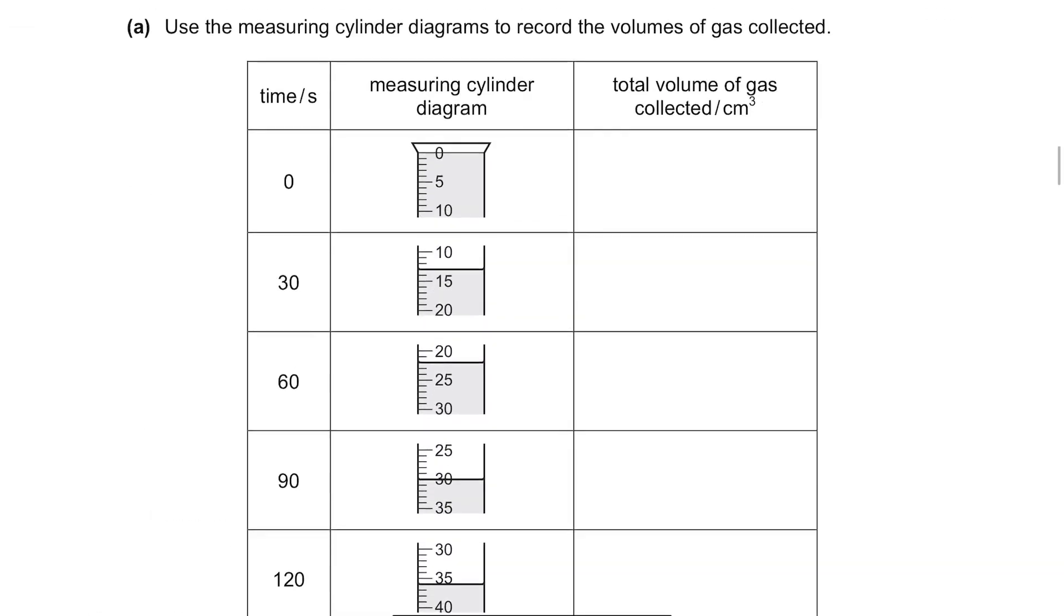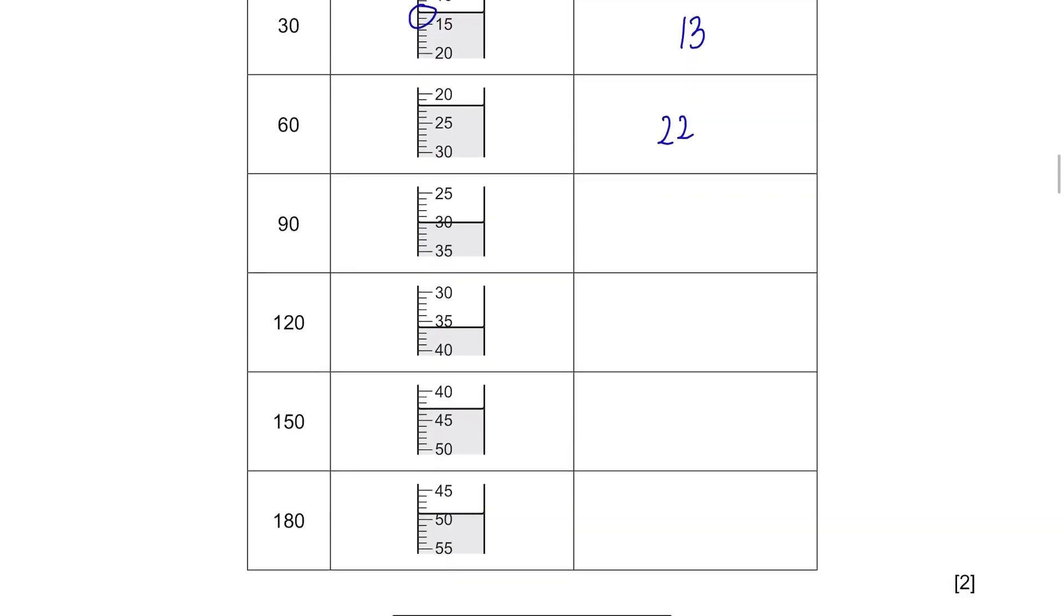Part A. Use the measuring cylinder diagrams to record the volumes of gas collected. For the first column, it's at 0 so it's just 0. Next, it's at 13, then 22. This question is simple, just read the readings from the cylinder. In 90 seconds, it's at 30, then 36, then 43, then 49.